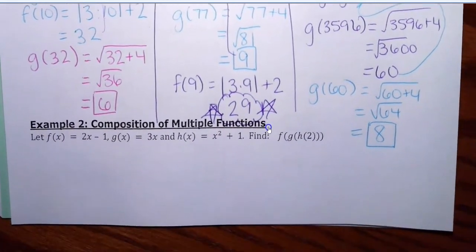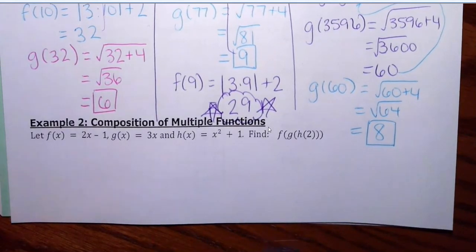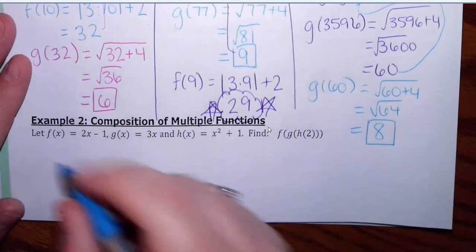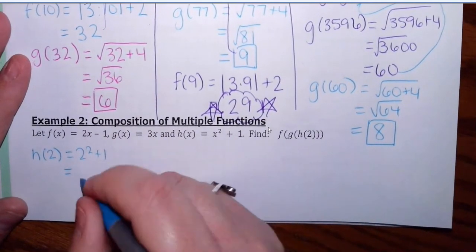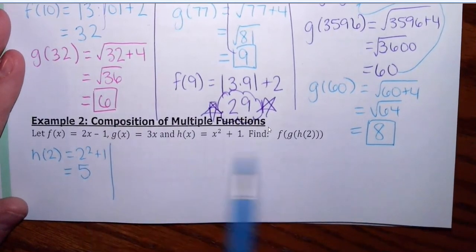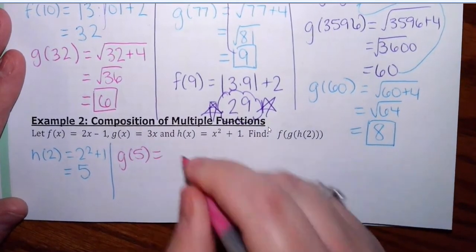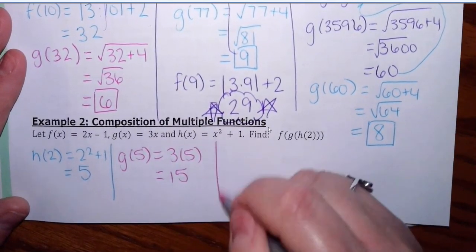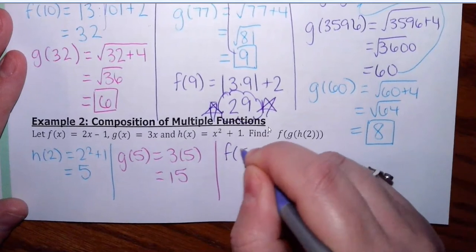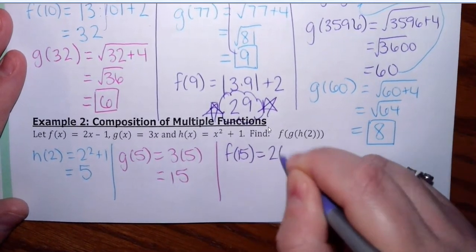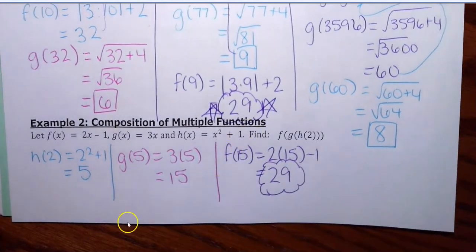There's another question here at the bottom. This is a composition, but it's a triple composition — same concept, we just work from the inside out. First, do h of 2: that's 2 squared plus 1, which gives us 5. Then plug that into the g function: g of 5 is 3 times 5, which is 15. Finally, f is on the outside, so plug 15 into the f of x function: 2 times 15 minus 1 is 30 minus 1, which is 29. That is our ultimate answer.